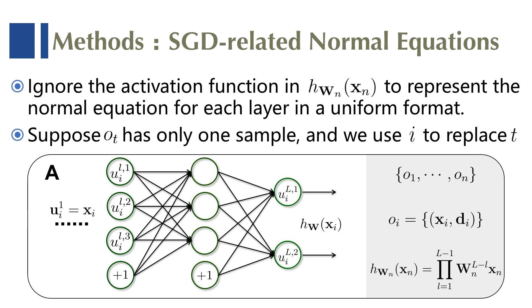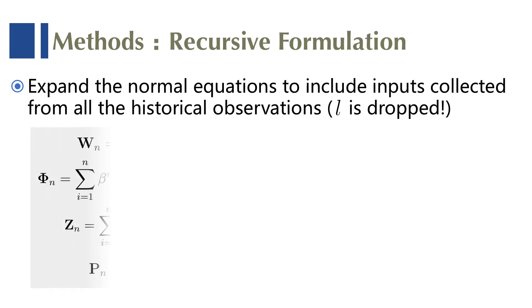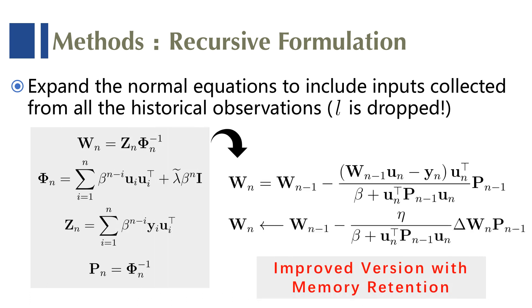To this end, we first elaborate on how the SGD optimization is related to normal equations in least-squares estimation, and by doing some simplifications, we can represent each layer by the system normal equations in a uniform format based on some derivations. With this representation, we can further expand the previous normal equations to include inputs collected from all the historical observations.